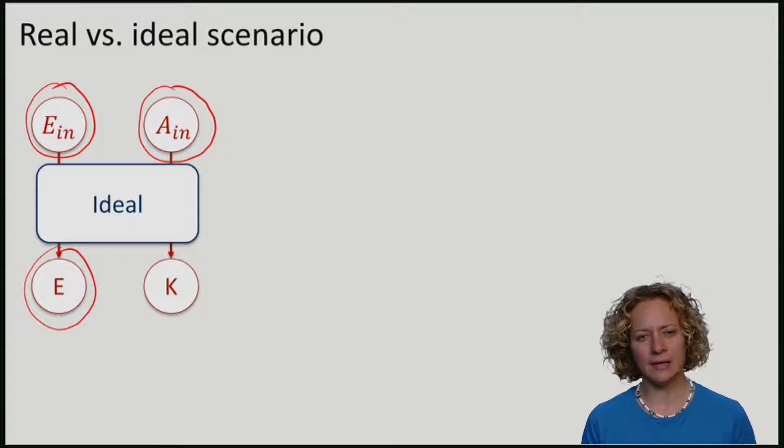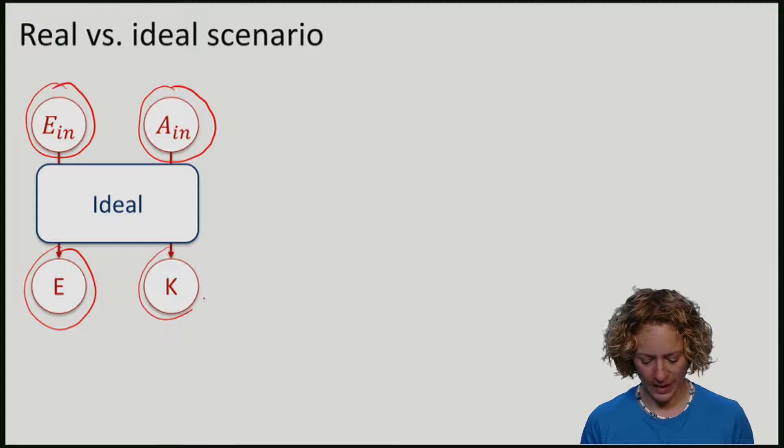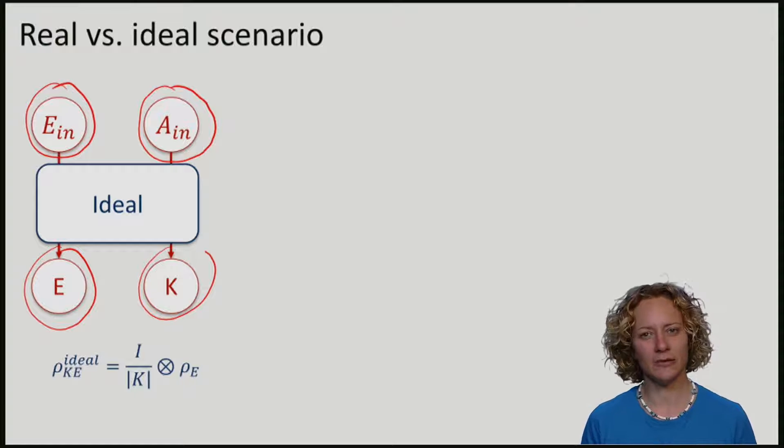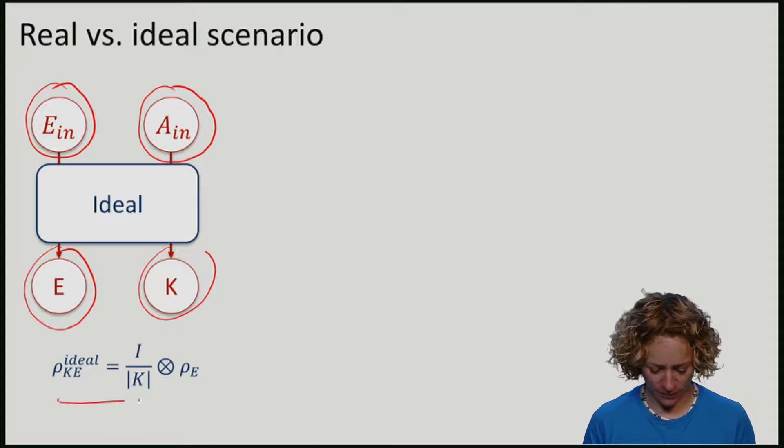Alice might produce a key, which we will call K. And in the ideal scenario, we would have managed to end up exactly in a situation which is precisely what we wanted. Eve is ignorant about the key.